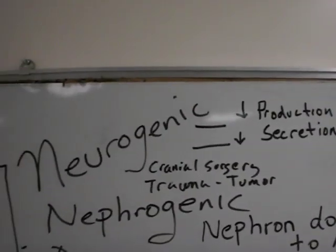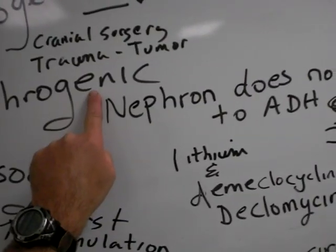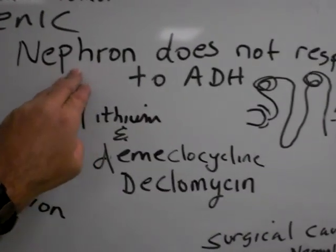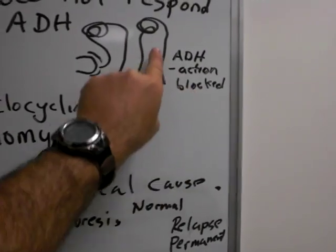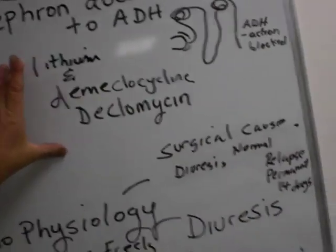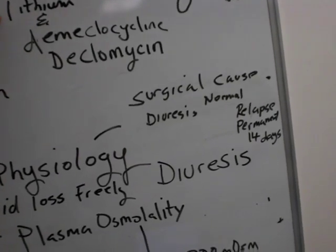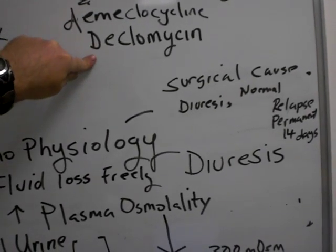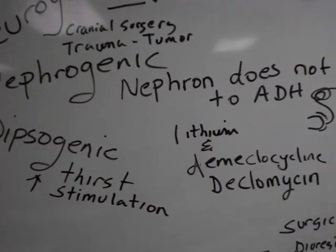The two types to really focus on: one is nephrogenic. Nephrogenic means the problem originates in the nephron — the nephron does not respond to antidiuretic hormone; ADH action is blocked or ineffective. Plenty of hormone but it's not responding, resulting in plenty of urine. Medications you need to know include lithium, a common medication for bipolar disease, and demeclocycline (declomycin). Both may cause nephrogenic diabetes insipidus.